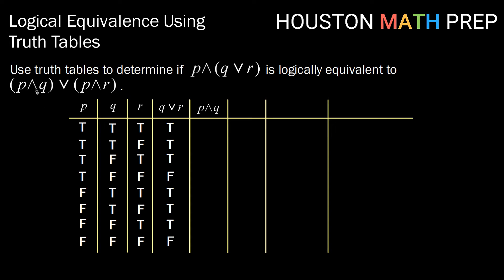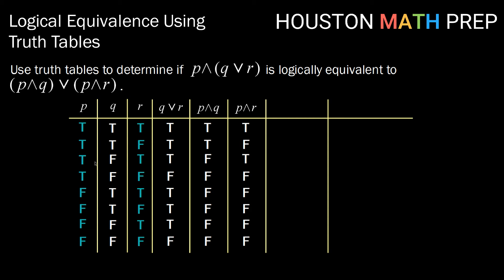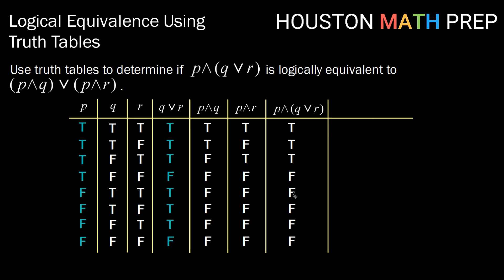For P and Q, looking at those columns, the conjunction is only true when both are true: true, true, false, false, false, false, false, false. For P and R, focusing on the P and R columns, we get true, false, true, false, false, false, false, false. Next, for the full first piece P and (Q or R), since it's a conjunction we only get true when both are true: true, true, true, false, false, false, false, false.